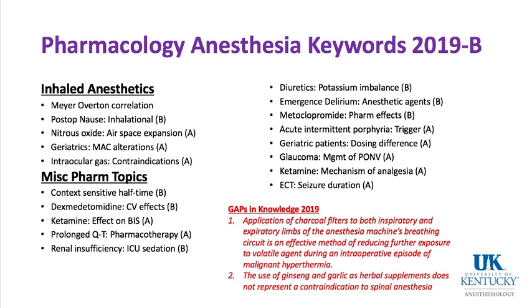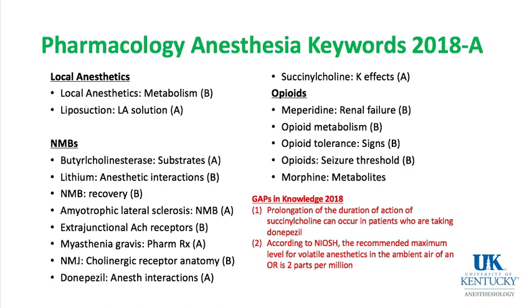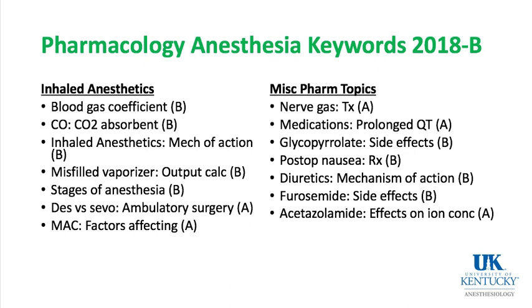From 2018 keywords: opioids related to renal failure and meperidine, metabolism of opioids, tolerance to opioids, seizure threshold with opioids, and metabolites of morphine. Under inhaled anesthetics: blood-gas coefficients, carbon monoxide and CO2 absorbent, how inhaled anesthetics work, misfilled vaporizers, stages of anesthesia, desflurane versus sevoflurane, MAC, and factors affecting MAC.